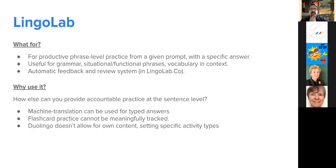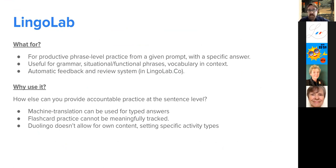LingoLab is for productive phrase-level practice from a given prompt with a specific answer. It's useful for grammar, situational and functional phrases, and vocabulary in context like in a sentence complex. It has automatic feedback and a review system in the LingoLab.co version. How else can you provide accountable practice at the sentence level? If you use a Google Form, kids could be using machine translation for their answers.